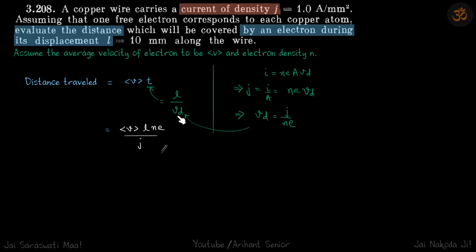To calculate drift velocity, we will go to our basic equation: I equals NEAVD, because this is the only equation which we know that carries the term of drift velocity.